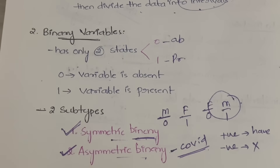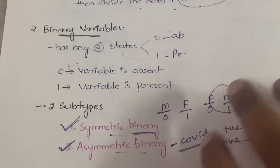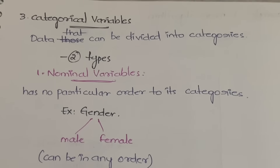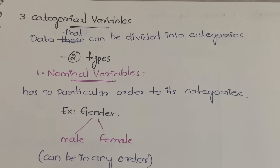The third category is categorical variables — data that can be divided into various categories. For example, student data can be divided into categories like pass/fail, male/female, or by sections. Any variable that can be divided into categories is called a categorical variable. Categorical variables also have two subtypes: nominal and ordinal.